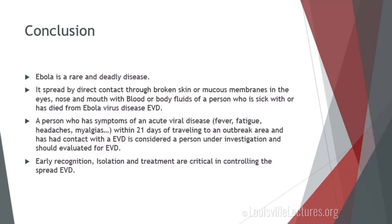In conclusion, Ebola is a rare and deadly disease. It's spread by direct contact to broken skin or mucous membranes of the eyes, nose, and mouth with blood or body fluids of a person who is sick or has died from Ebola virus disease. A person who has symptoms of acute viral disease manifesting within 21 days of traveling to an outbreak area and has had contact with someone who's had Ebola virus disease is considered a person under investigation and should be evaluated for Ebola virus disease. Early recognition, isolation, and treatment are critical in controlling the spread of Ebola virus disease.